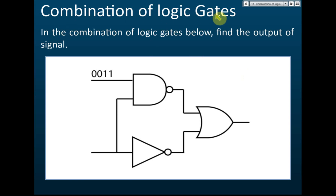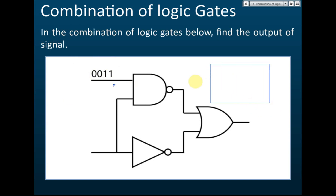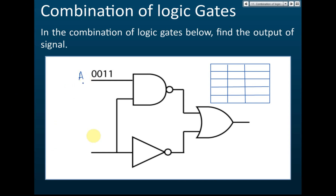In the exam, they don't give you just one logic gate — they give you combinations of logic gates. Usually it's a combination of three logic gates. They will give you a truth table with input A, input B, and output X.